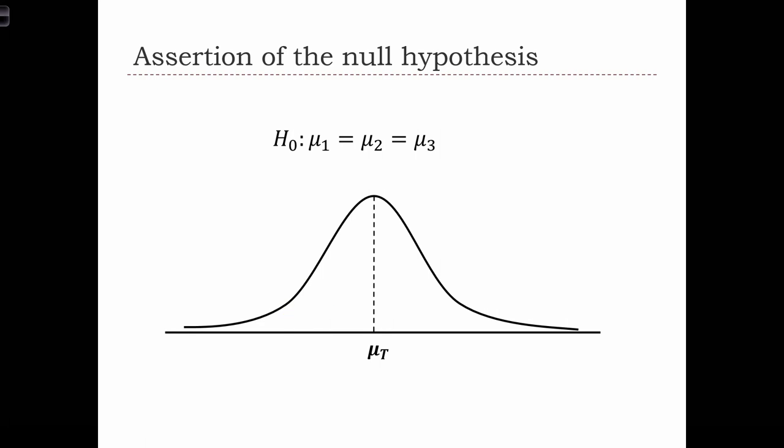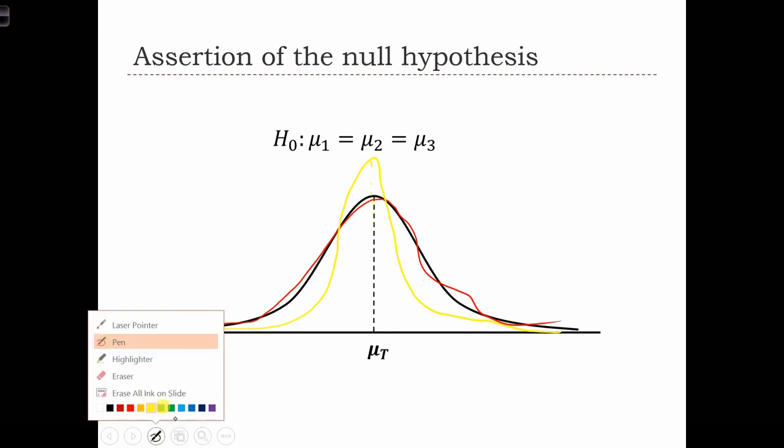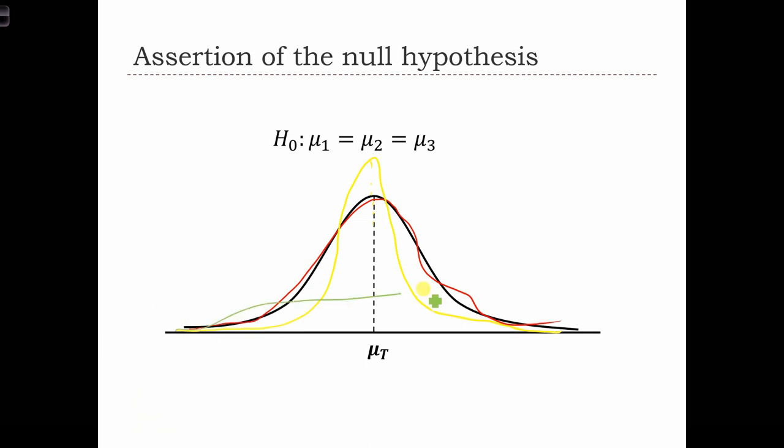That basically means that we have three distributions here, maybe a red distribution, a yellow distribution. It can be a different distribution so long as it has the same mean. And maybe we have here a green distribution, which also has a mean at the same place. We're going to call this central value of the three means the grand mean or the total mean. So mu capital T for total. It just implies that the three groups have the same mean.